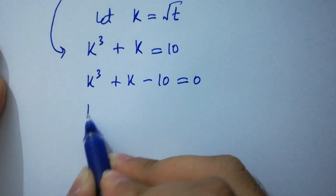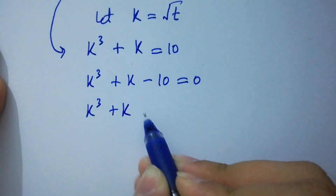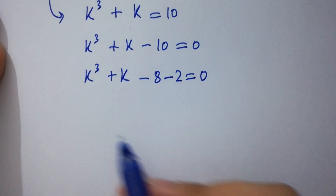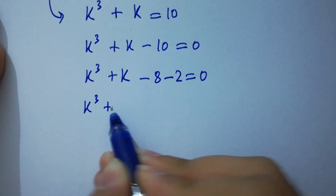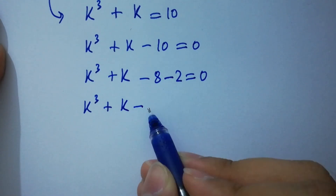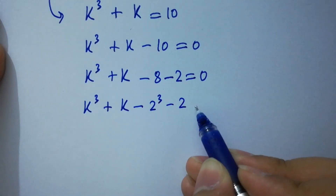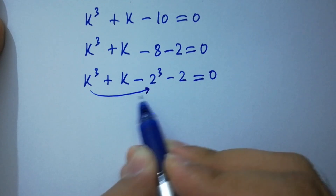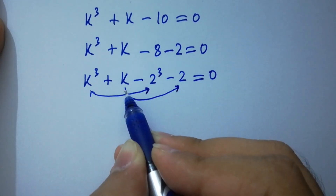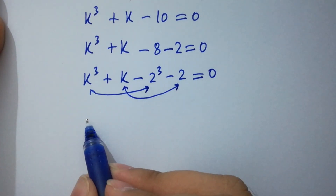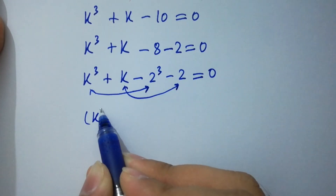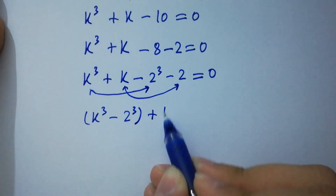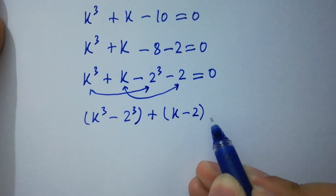Here minus 10 is the same as minus 8 minus 2, equal to 0. So k cubed plus k minus 8 is the same as 2 cubed minus 2, equal to 0. By corresponding, you can see k cubed and 2 cubed, and k and 2. So we can write k cubed minus 2 cubed plus k minus 2 equals 0.